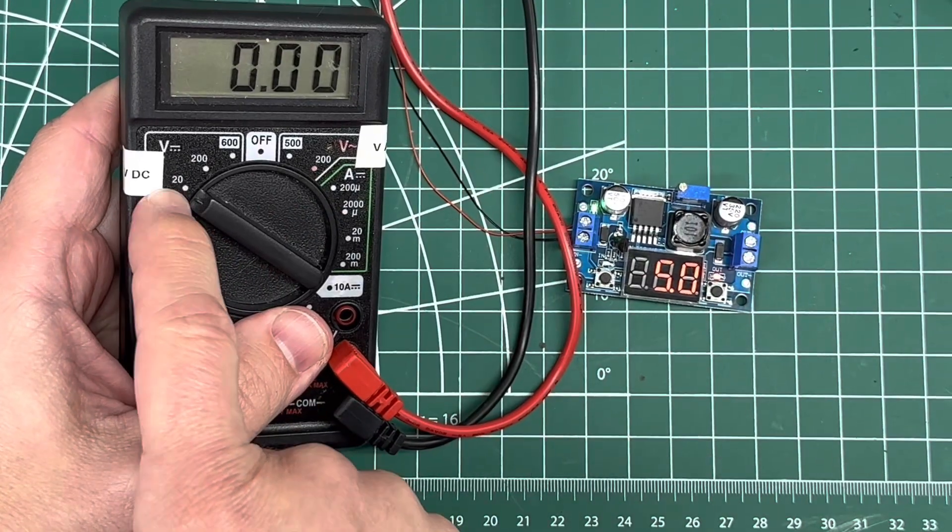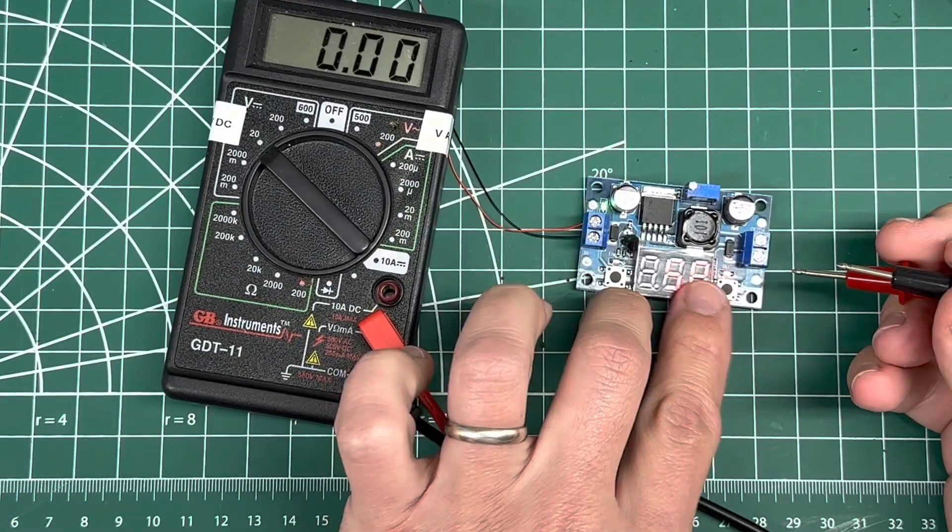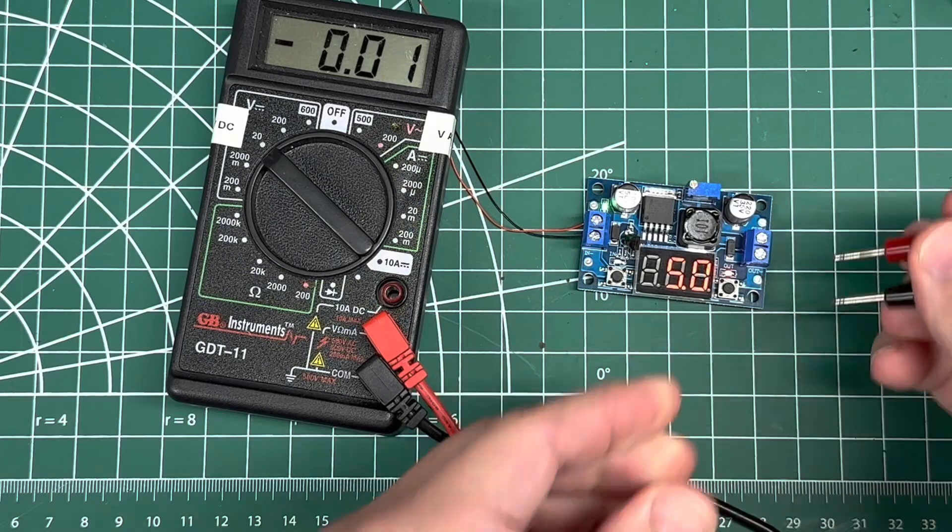We're looking at less than 20 volts, so I'm going to put it on the 20-volt setting here. I want to check how close am I to 5 volts. Am I actually getting 5 volts out?